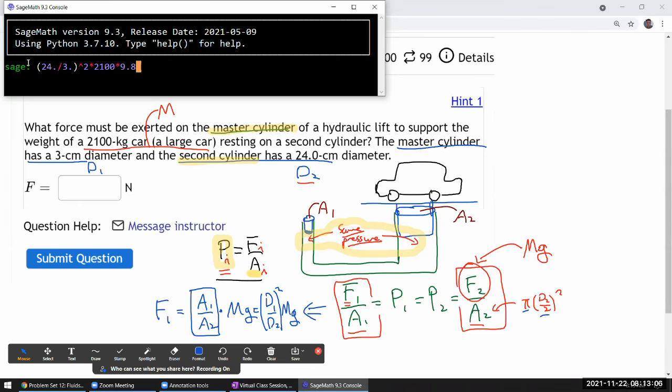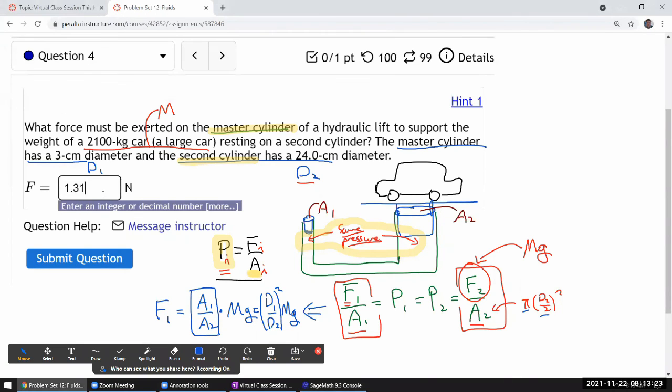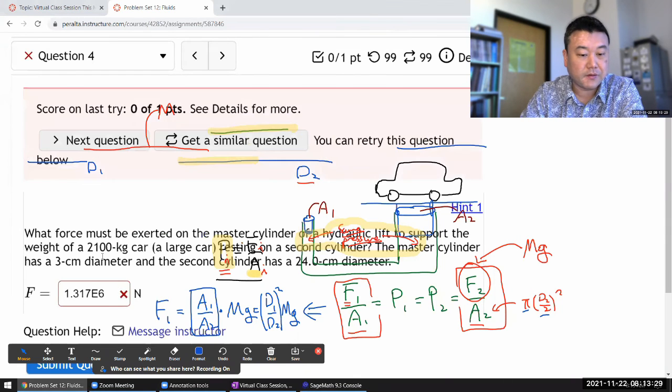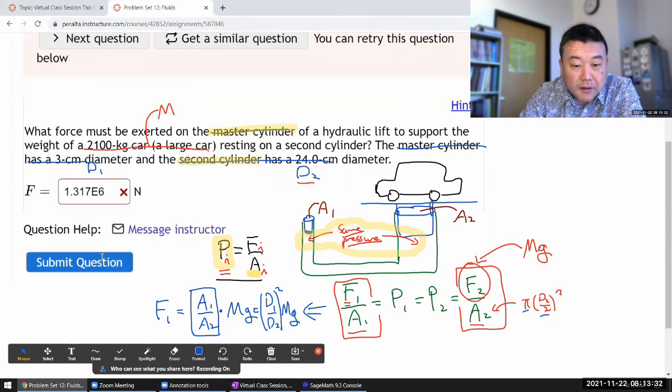The centimeters in these numbers will cancel out and the remaining units are basic SI units, so I'll get the basic SI unit of force, newton. So I think I can put this in as a scientific notation: 1.317 times 10 to the power of six. That should be recognized—wait, why not?